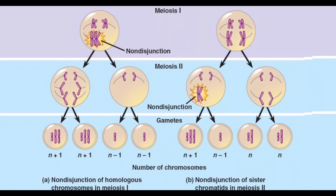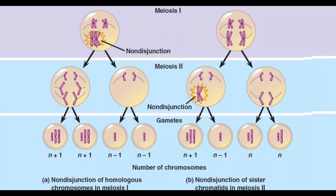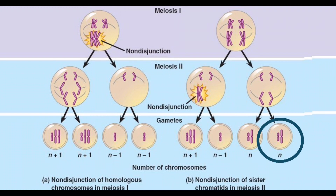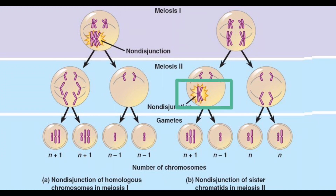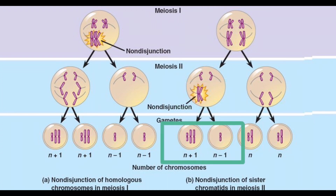Why does this happen? When an egg is made it goes through two division processes and you end up with a normal number of chromosomes in the egg. As we get older, these chromosomes become sticky and don't divide properly, and you end up with an abnormal number of chromosomes in the egg. If this type of egg were to fertilize, you end up not conceiving, miscarrying, or carrying a genetically abnormal pregnancy. So it's important to seek help sooner rather than later.